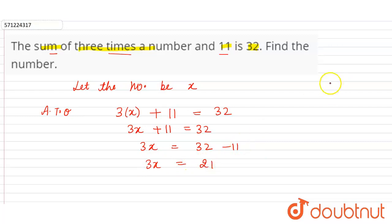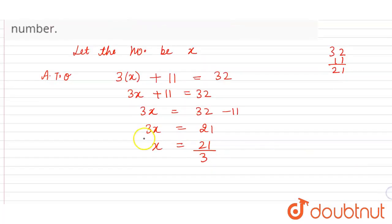Now x will be equal to 21 divided by 3. Here it is in multiplication, so it will be in division on the right hand side. 3 into 7 is 21, so the value or the number we have to find is 7.